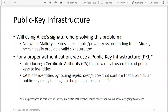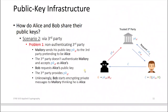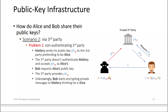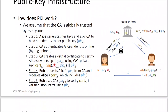For proper authentication we use a Public Key Infrastructure. We are only going to discuss the surface here. PKI introduces a Certification Authority, which contains public keys acting as the trusted third party. The CA binds identities by issuing digital certificates that confirm a particular public key really belongs to the person it claims. This solves the first problem by authenticating that Mallory can't act as Alice.